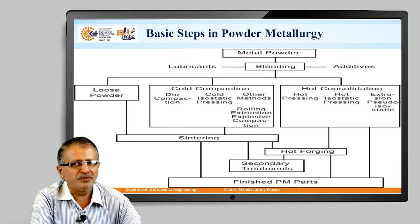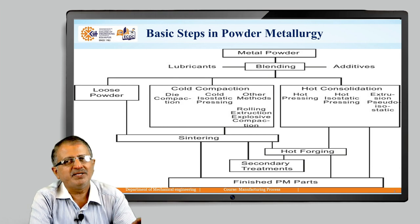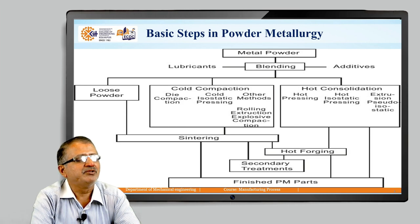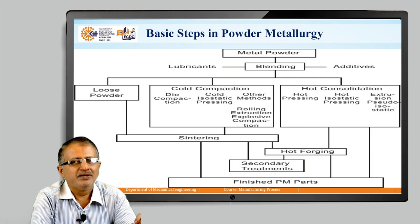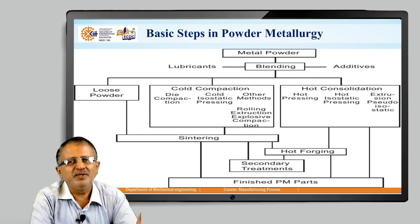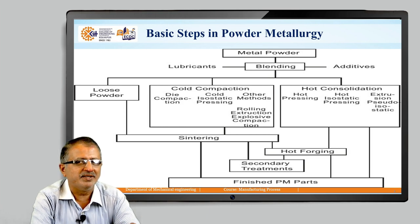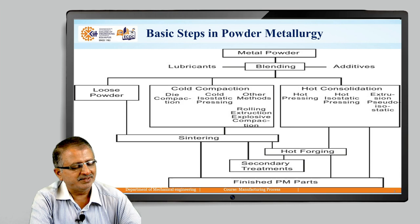In cold compaction we have many options: die compaction, cold isostatic pressing, rolling extrusion, and explosive compaction. Cold is normally at regular temperature, but hot consolidation is at a higher temperature — hot pressing, hot isostatic pressing, extrusion, or pseudo isostatic pressing. After that, the product is taken for heating, which is called the sintering process, normally at 80 to 90 percent of the melting point temperature range. If necessary, some hot forging or secondary treatment is done; otherwise, after sintering the product is ready for use.